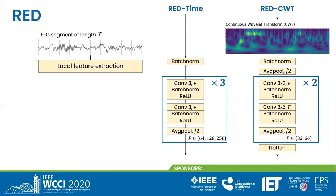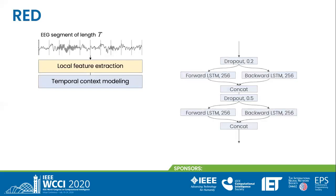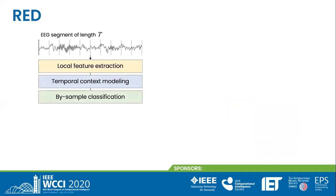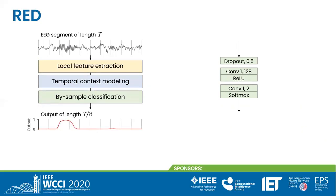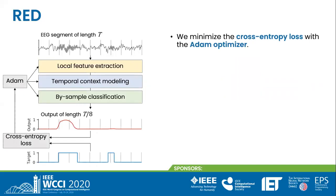After this stage, both models have the same architecture. The second block implements temporal context modeling. It is composed of bidirectional recurrent layers so that contexts from both the past and the future are integrated. Specifically, we stack two bidirectional LSTMs regularized with dropout. The third block implements per-sample classification. It is composed of two convolutional layers with kernel size 1. The first layer has dropout and ReLU, and the second layer has softmax activation to predict class probabilities. The output is a dense segmentation of the EEG segment, with 0 corresponding to the background class and 1 corresponding to the event of interest, in this case sleep spindles. The loss function is the cross-entropy loss with respect to the expert annotations, minimized by the ADAM optimizer. The start and end times of each event are obtained by thresholding this probability.